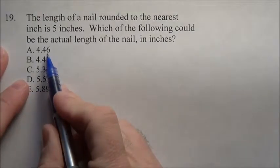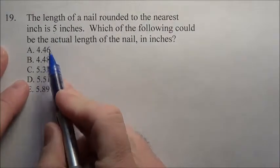So in other words, which of these numbers rounded to the nearest whole number would be 5?